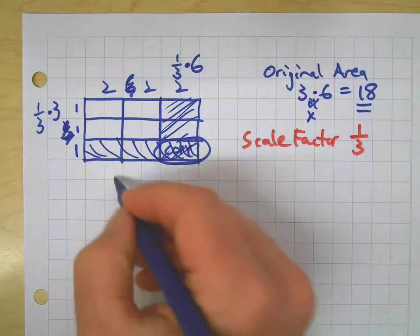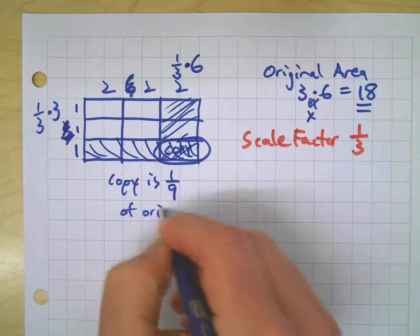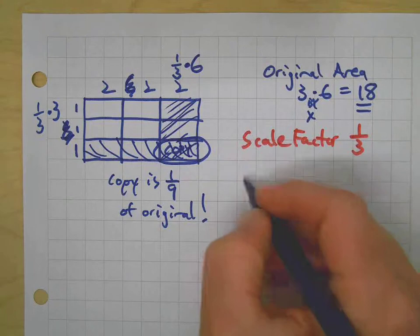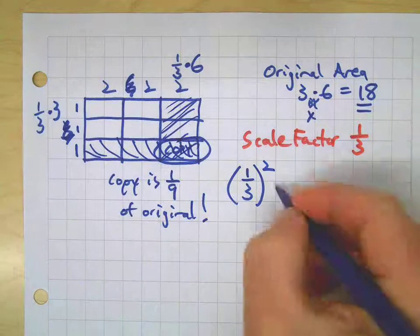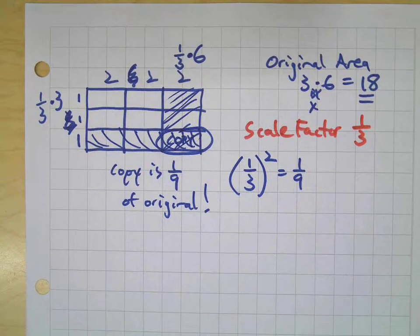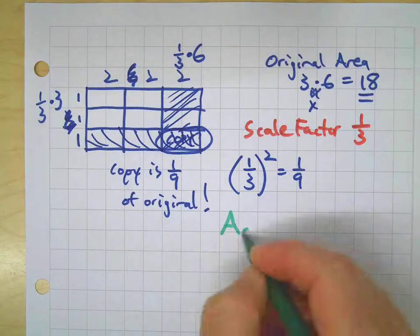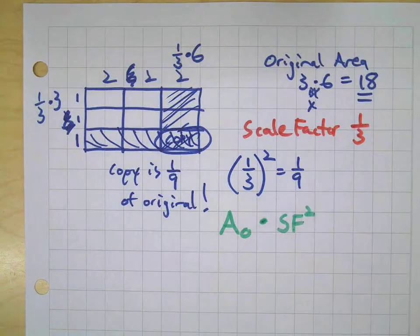Here's my copy, because I took one-third of that dimension and one-third of that dimension. The copy is one-ninth of the original — that is crazy! We applied the scale factor to each of the two dimensions. We established our algorithm in the previous video using enlargements, and now here we are doing the same thing with reductions.